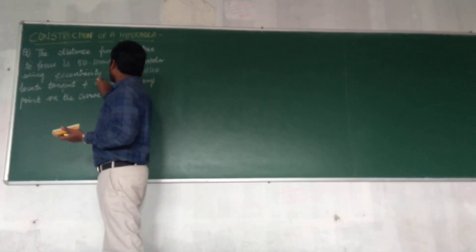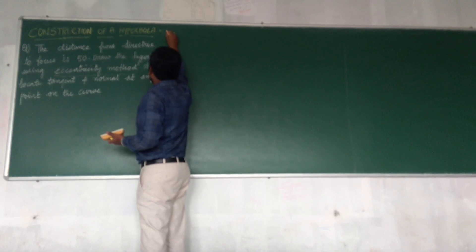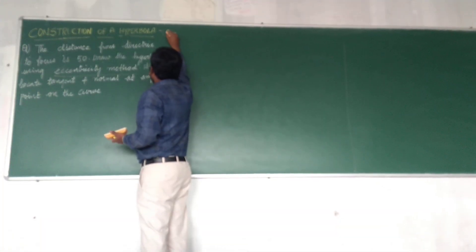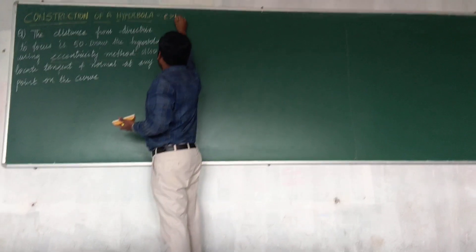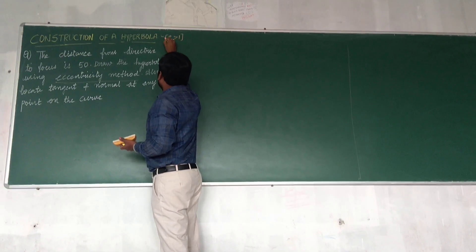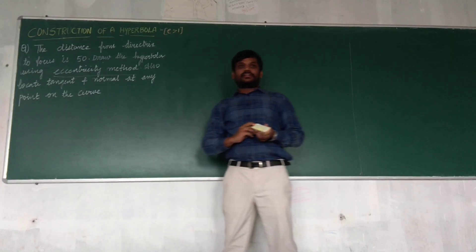First thing is eccentricity method. That means I am going to note this e-method. The hyperbola e is greater than 1. I hope you know that. E is greater than 1.